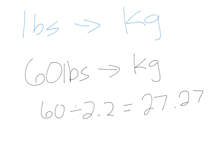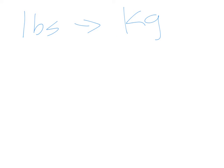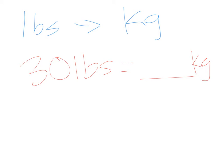Let's do one more example — thinking about pediatric patients, let's say 30 pounds. Try to convert that to kilograms. We take 30 and divide it by 2.2 to get that to kilograms. 30 divided by 2.2 gives us 13.63 repeating — 13.6 is just fine. That's what we get in kilograms. This is the first step to what we're doing here.